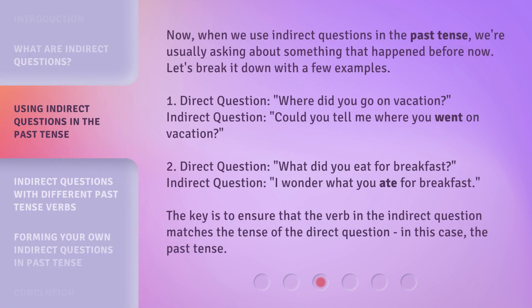Now, when we use indirect questions in the past tense, we're usually asking about something that happened before now. Let's break it down with a few examples. First, Direct Question: "Where did you go on vacation?" Indirect Question: "Could you tell me where you went on vacation?" Second, Direct Question: "What did you eat for breakfast?" The key is to ensure that the verb in the indirect question matches the tense of the direct question — in this case, the past tense.